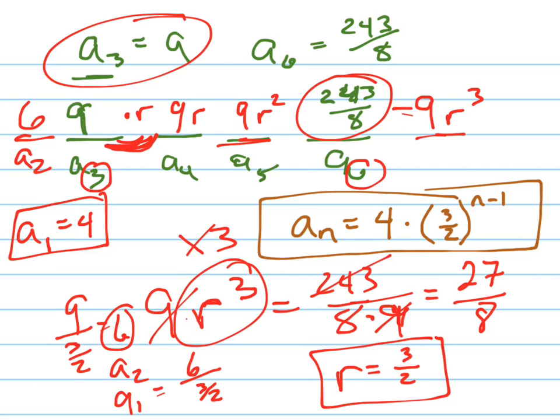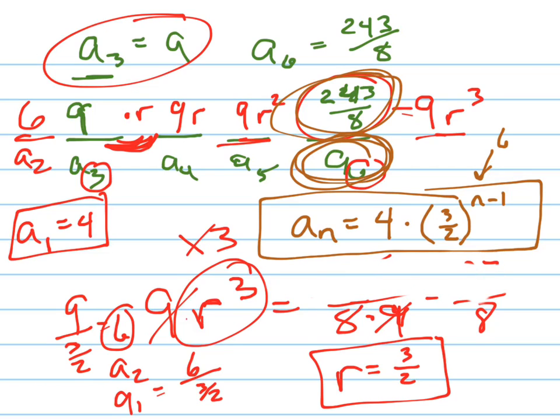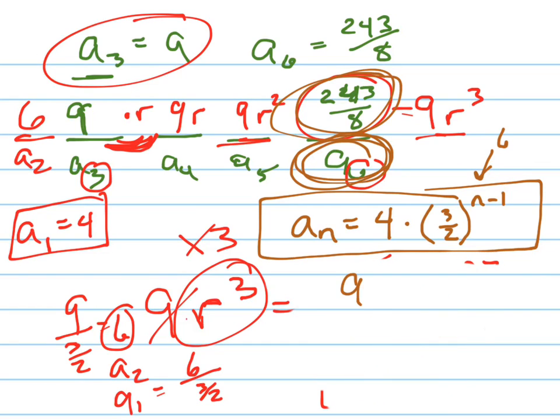Test it, see if it worked. What's your 6th term supposed to be? It's supposed to be that big old mess. Plug in 6 for n, that would turn this into 5. So we're testing this out. I always like to test it. a sub 6 equals 4 times 3 halves to the 5th.